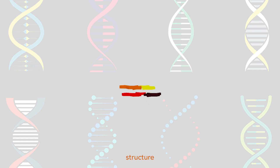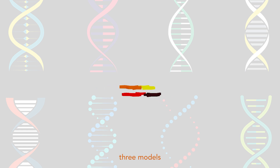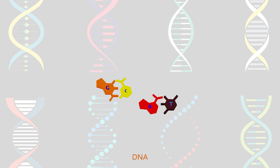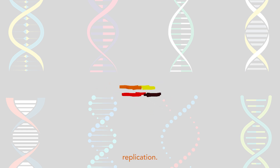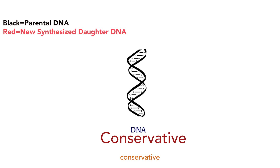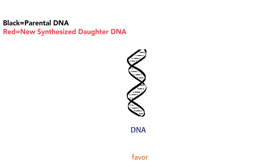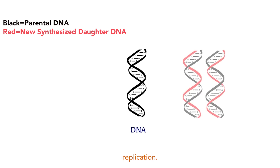After the DNA structure was solved, there were three models proposed for DNA replication: semi-conservative, conservative, and dispersive. Most scientists favor the semi-conservative model of DNA replication.